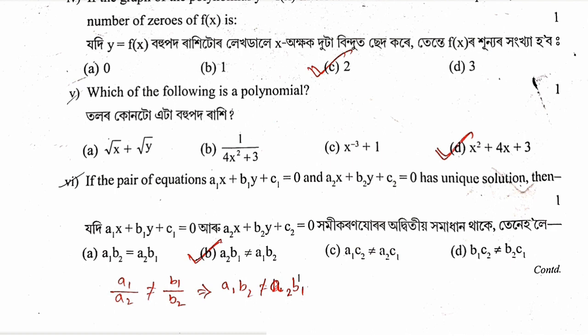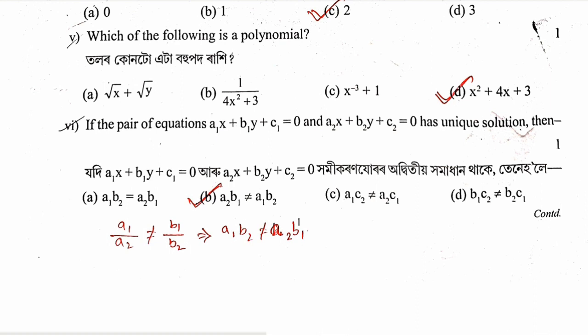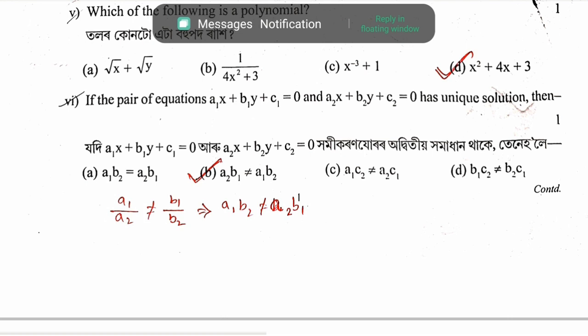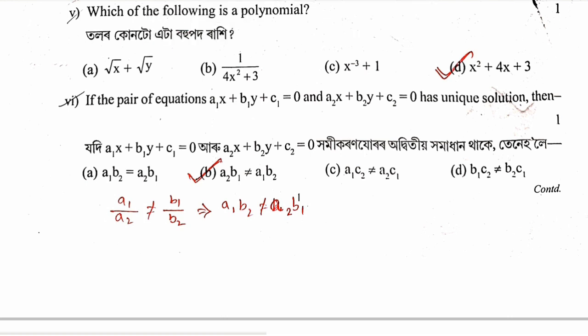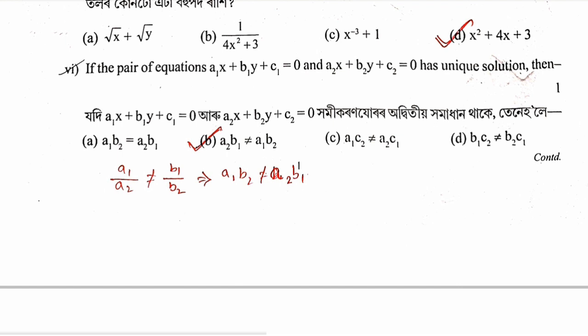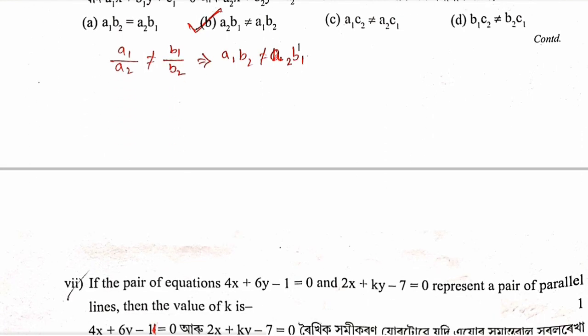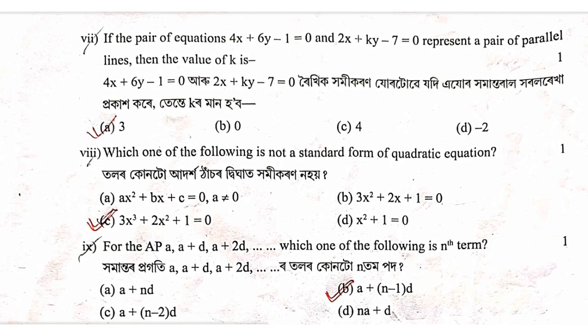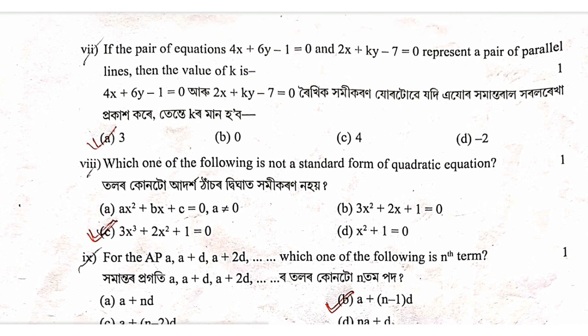The next question involves a system of linear equations: a1x plus b1y plus c1 equals 0 and a2x plus b2y plus c2 equals 0. The condition is when a1 by a2 does not equal b1 by b2. In that case, a1 by a2 equals b1 by b2 does not equal c1 by c2.